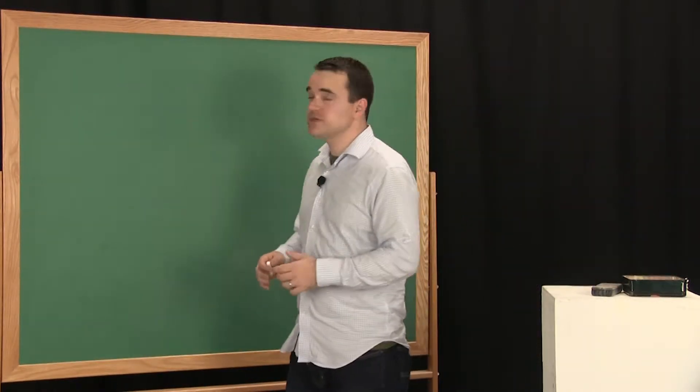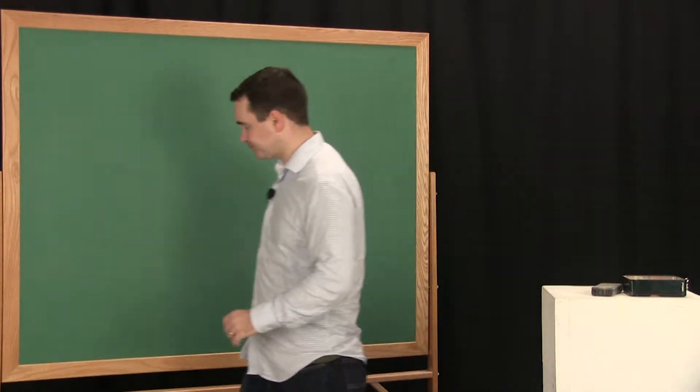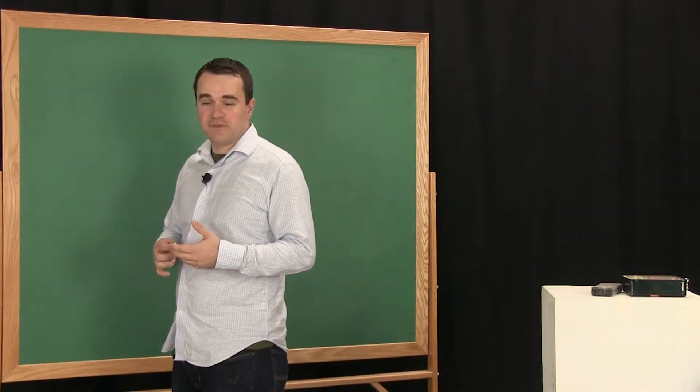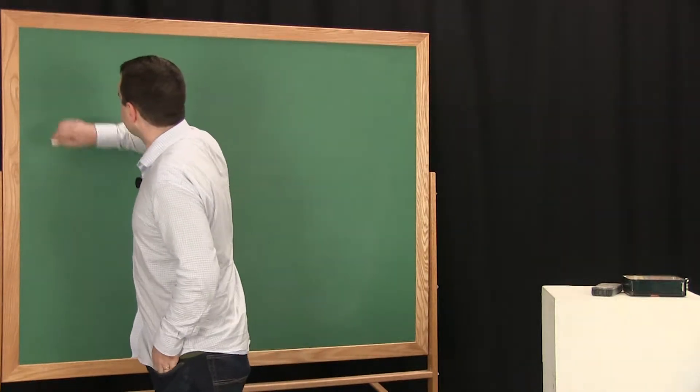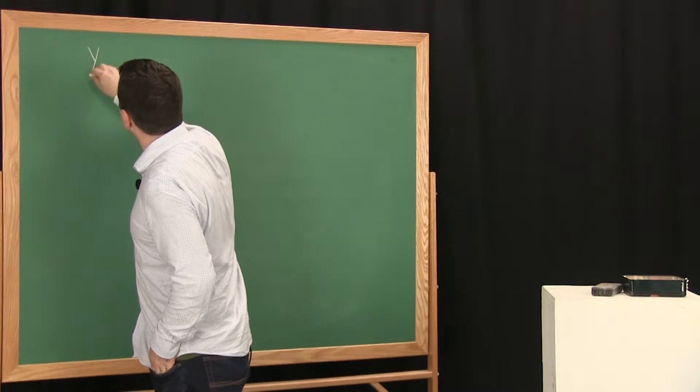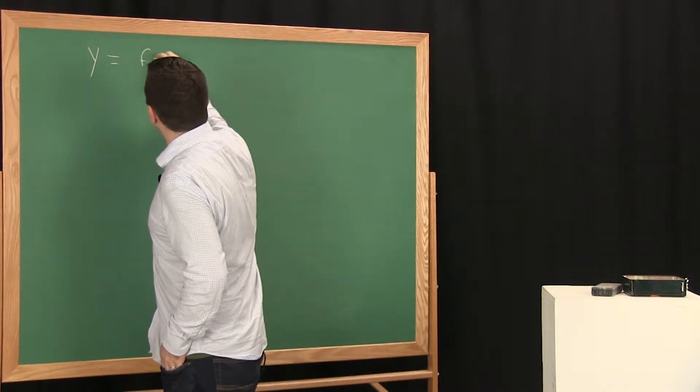So here we go. First of all, I'll just write it down and then I'll explain it. So let's take a look. So the derivative, it's going to be a limit. And by the way, if you take a function, y equals f of x.